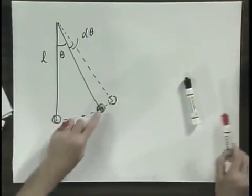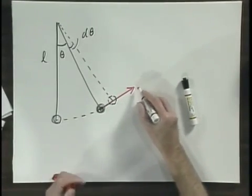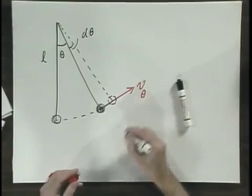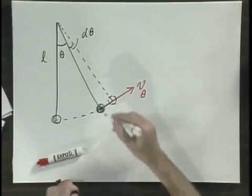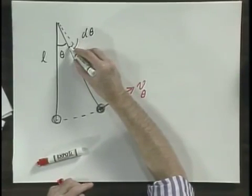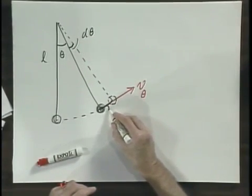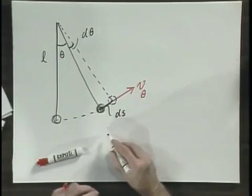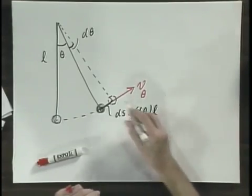This object at this moment here has a velocity in this direction, tangential. I call it v of theta. And in the time that this angle d theta takes place, there is here a little arc, and I call the arc dS. And that little arc dS is d theta in radians times the length L.